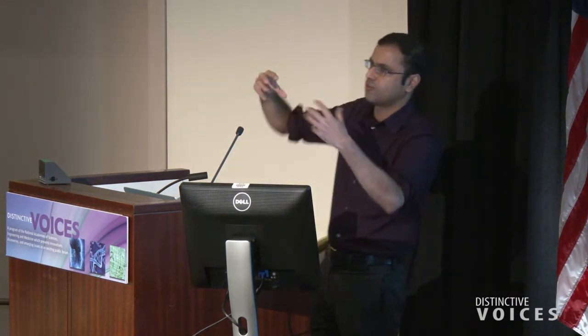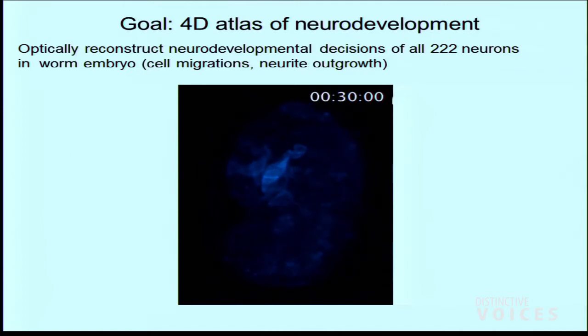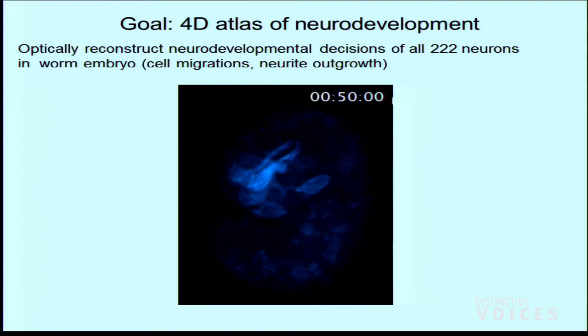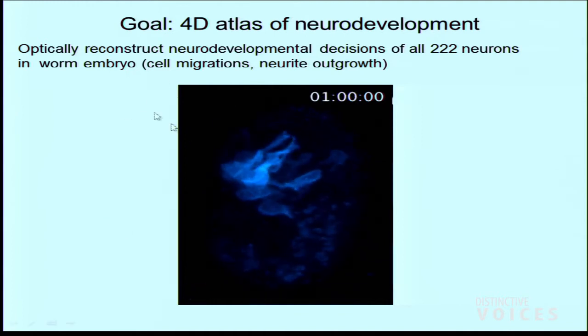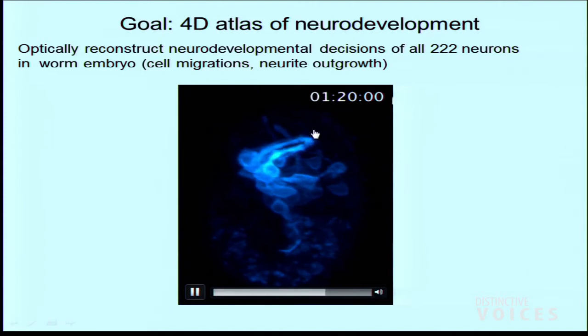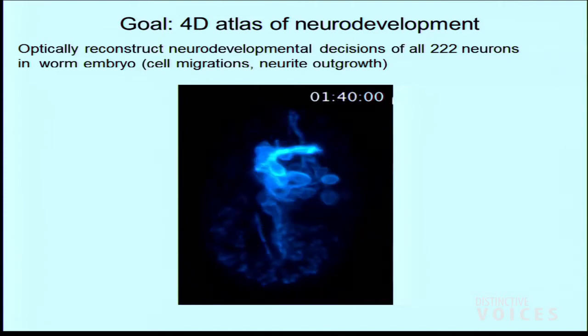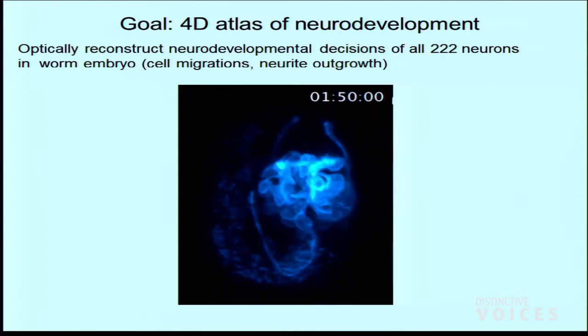I think if you want to ask general principles about how all the neurons come together to form the brain, this is a good organism to start with. More specifically, what I'd like to do is to follow all 222 neurons in the embryo and their cell outgrowths — their axons and neurites. Here's a movie showing a bunch of neurons forming the primitive brain — a ring called the nerve ring. I would like to know where all the neurons are.